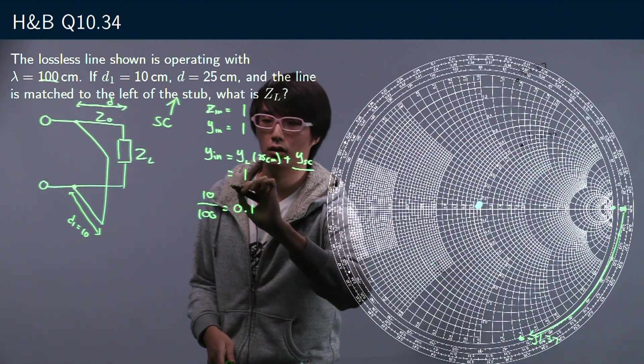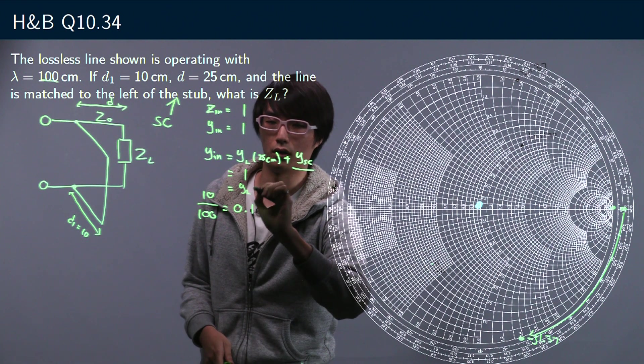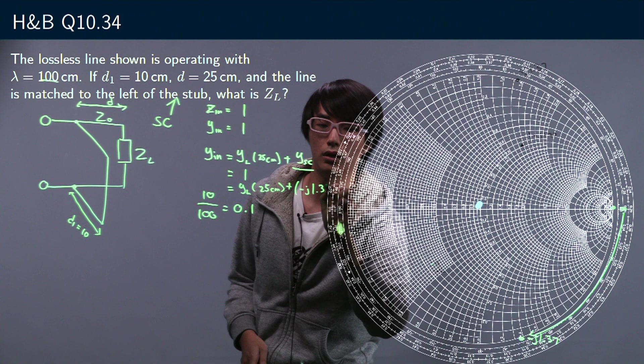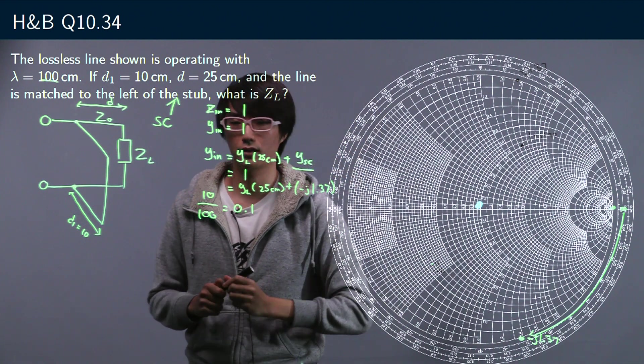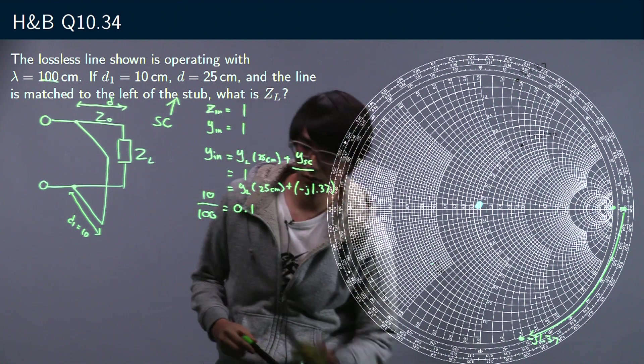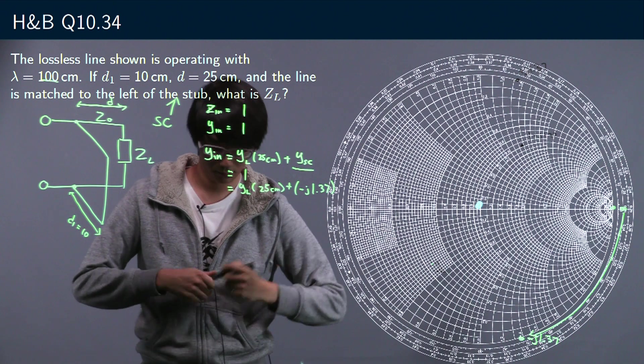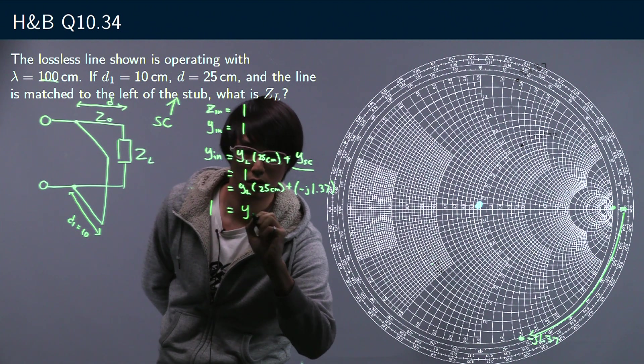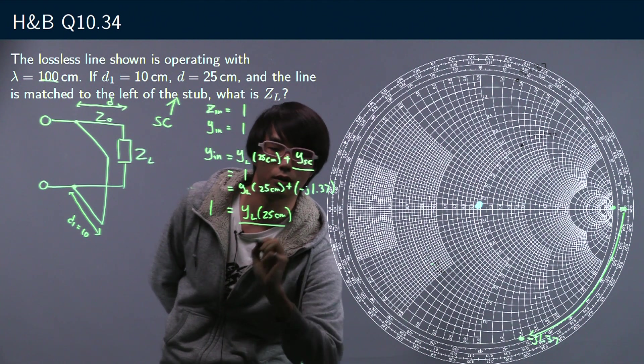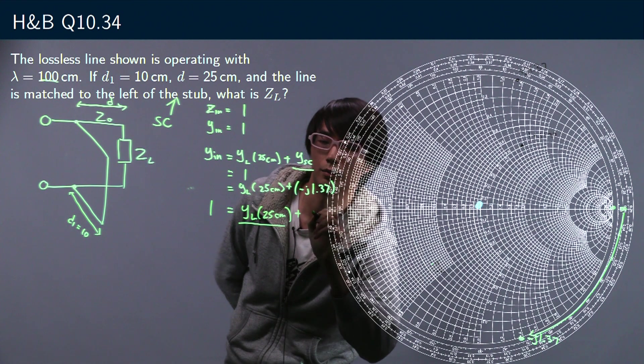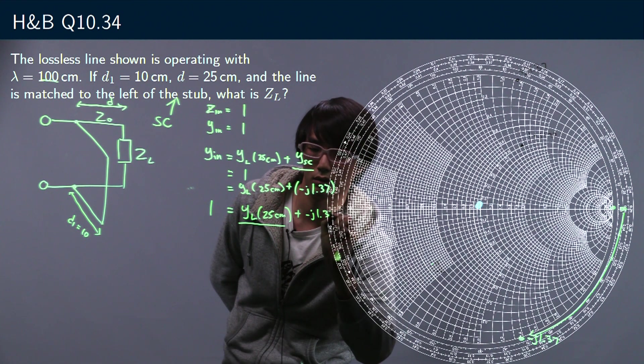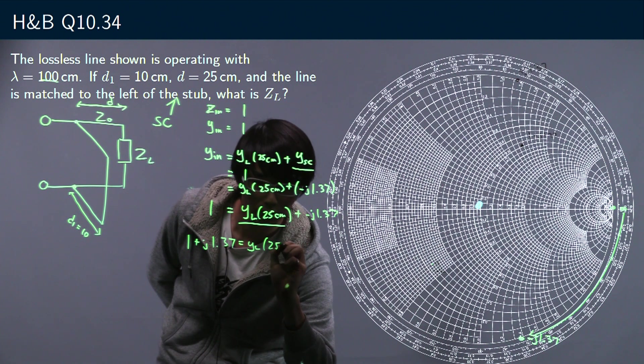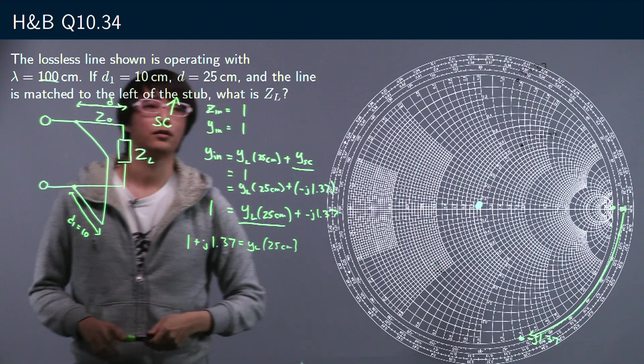Great, so now let's simplify this just a little. This equals YL at 25 cm plus minus j 1.37. And so this means that we know the value of the load admittance at 25 centimeters. We can solve for that: one plus j 1.37 is equal to YL.